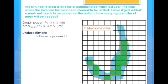Now, I will underestimate all of the area. When I do that, I count 14 squares. To find the area, I will multiply 14 by one-sixteenth square miles, which gives me an area of 875 thousandths of a square mile.